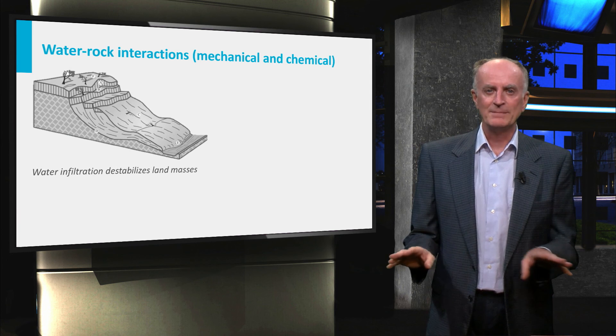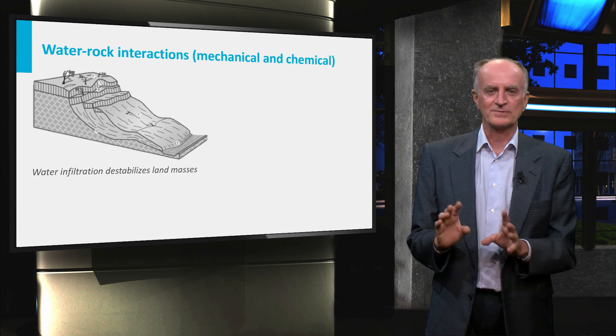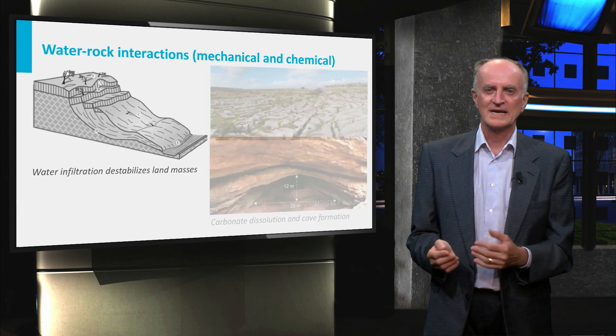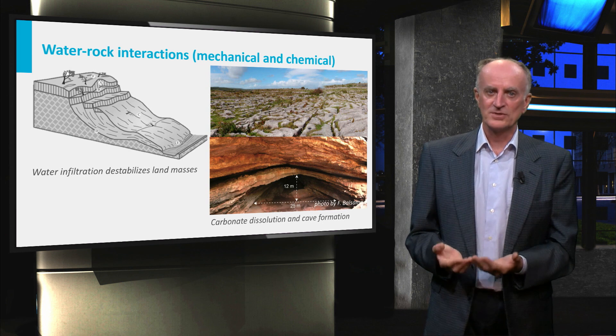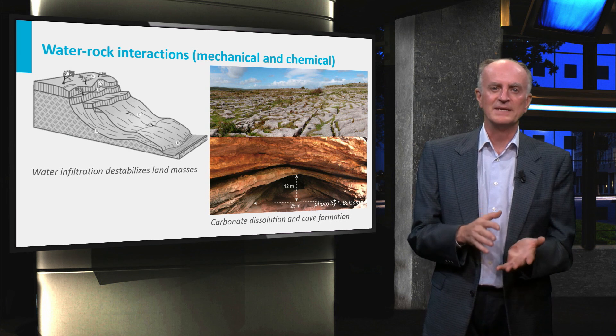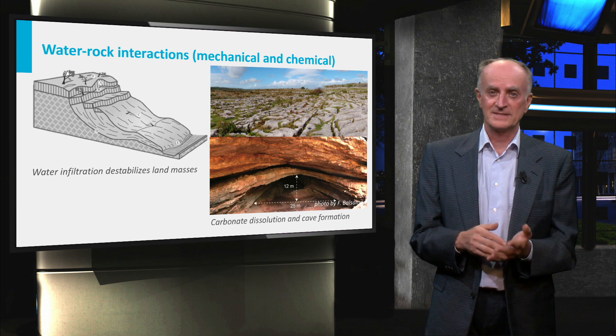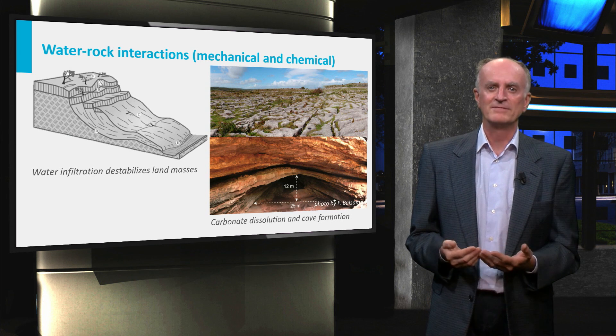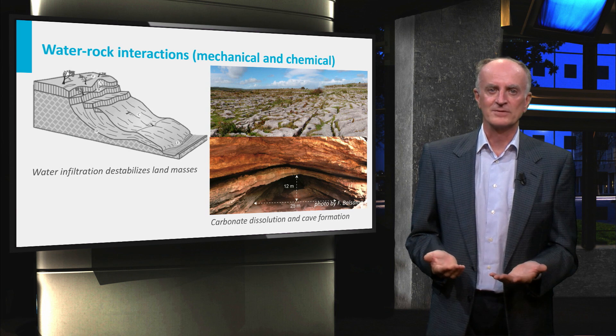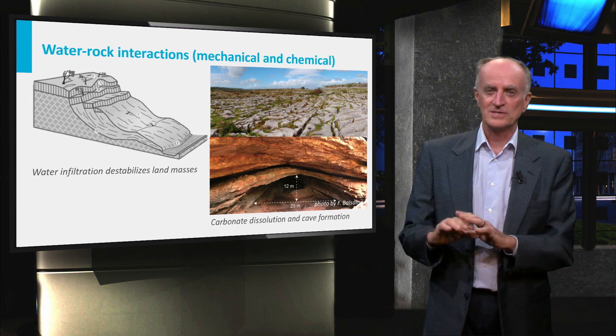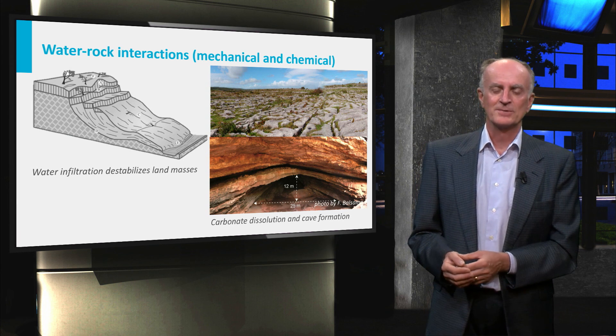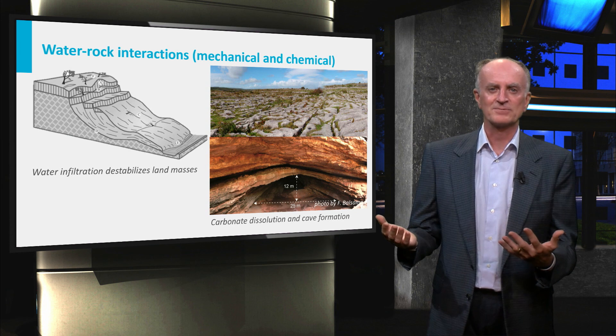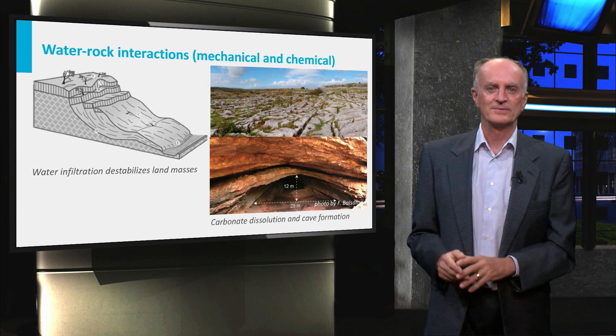Interesting are also the chemical interactions between the water and the surrounding rocks. Waters are typically carrying various ions and cations and in the appropriate conditions can start precipitating minerals such as calcite. This is a very important phenomenon impacting, for instance, the permeability of faults. On the other side, waters can also dissolve the surrounding rock. This is especially the case for carbonates resulting in spectacular karst structures and large underground caves.